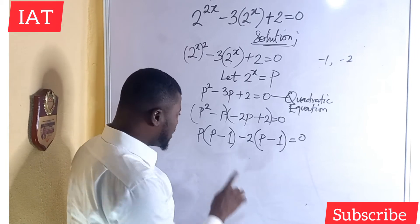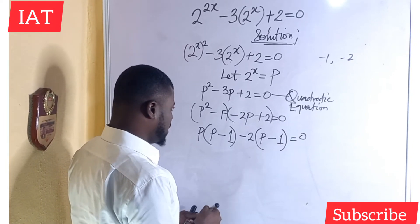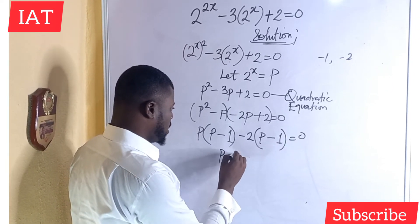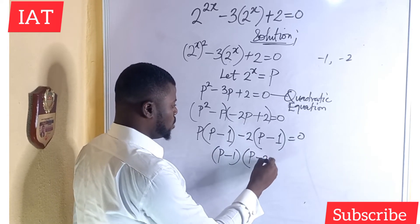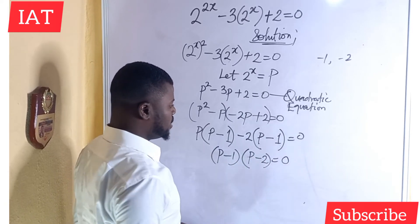So at this point, you will see that these two in the bracket are the same. I will have to pick one of it and also consider the one outside, which is p minus 2, and this will be equal to 0.